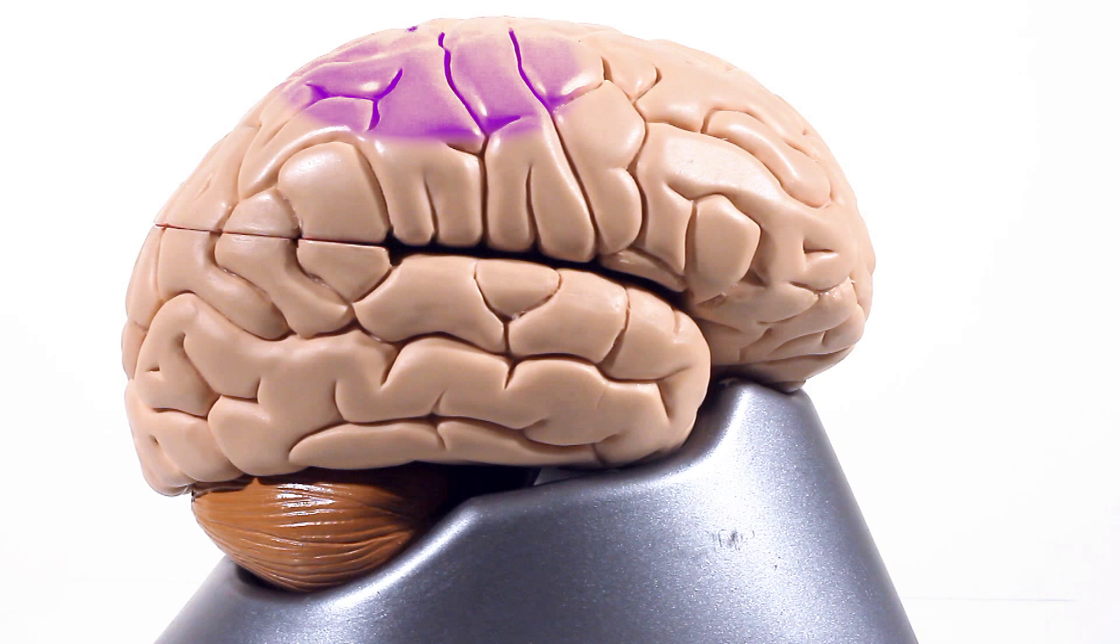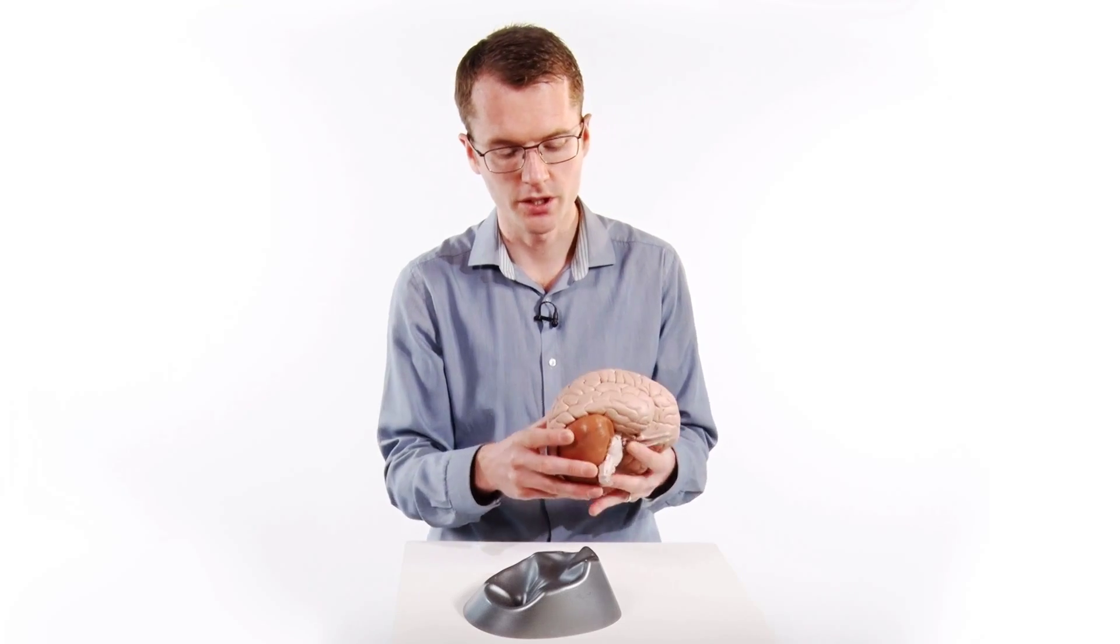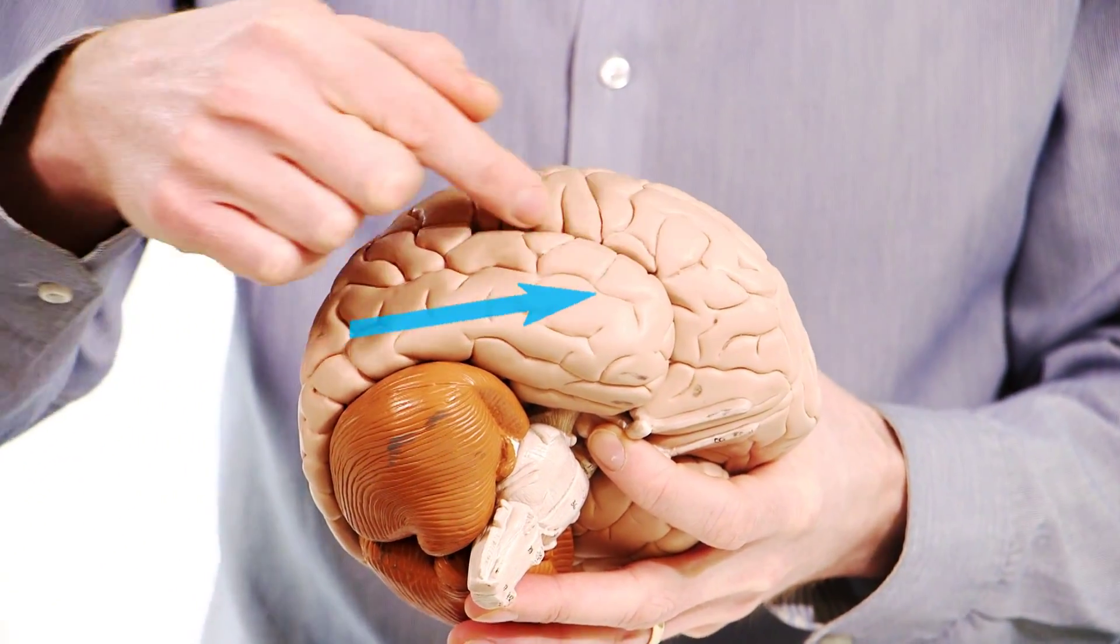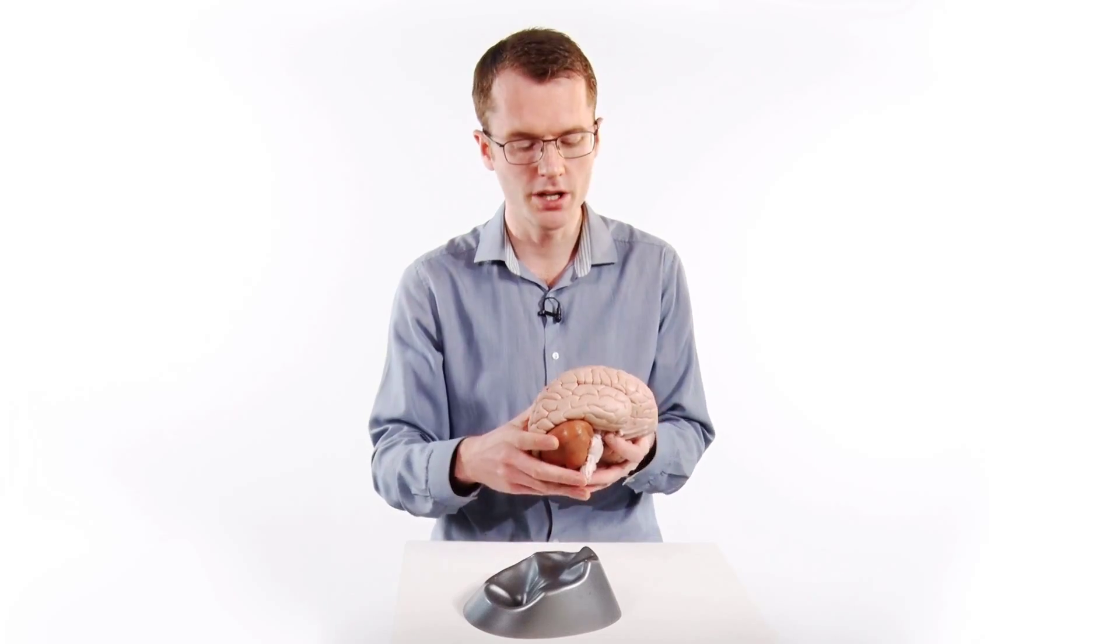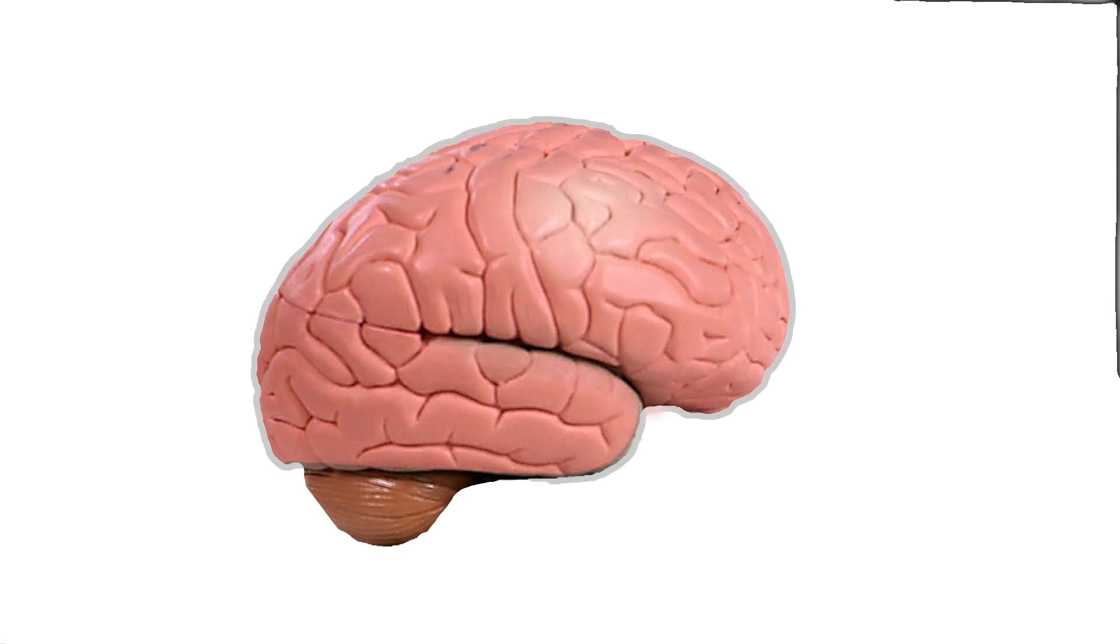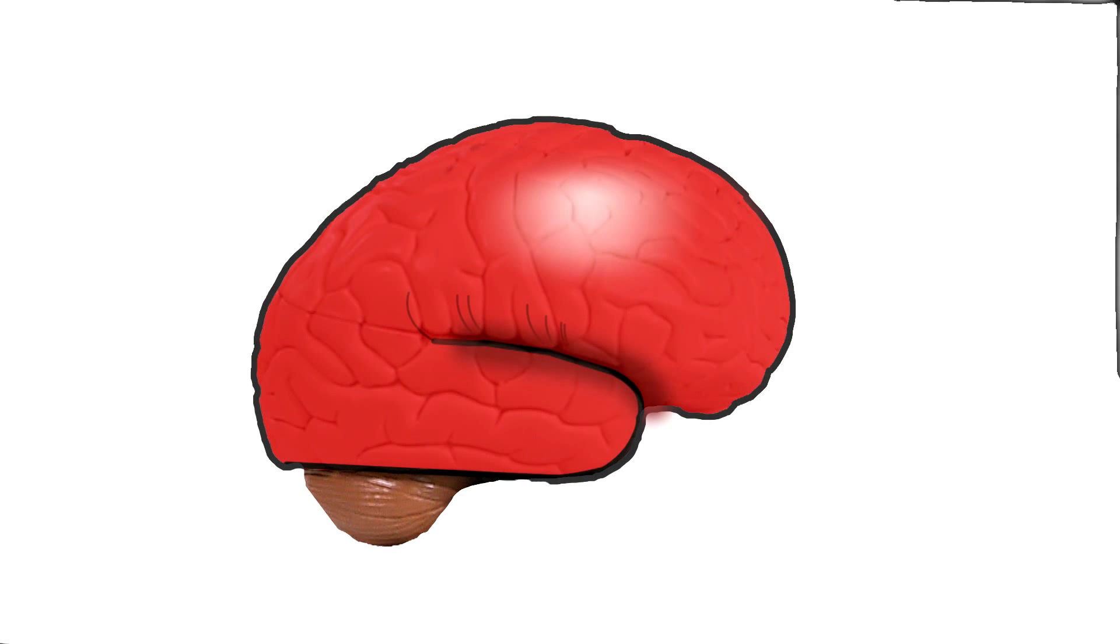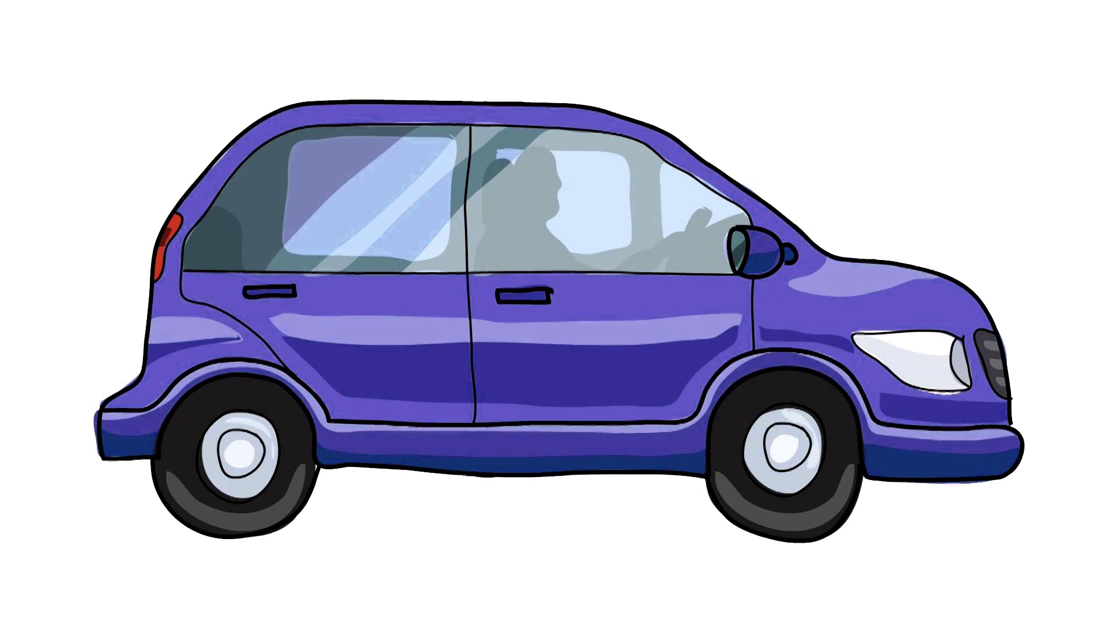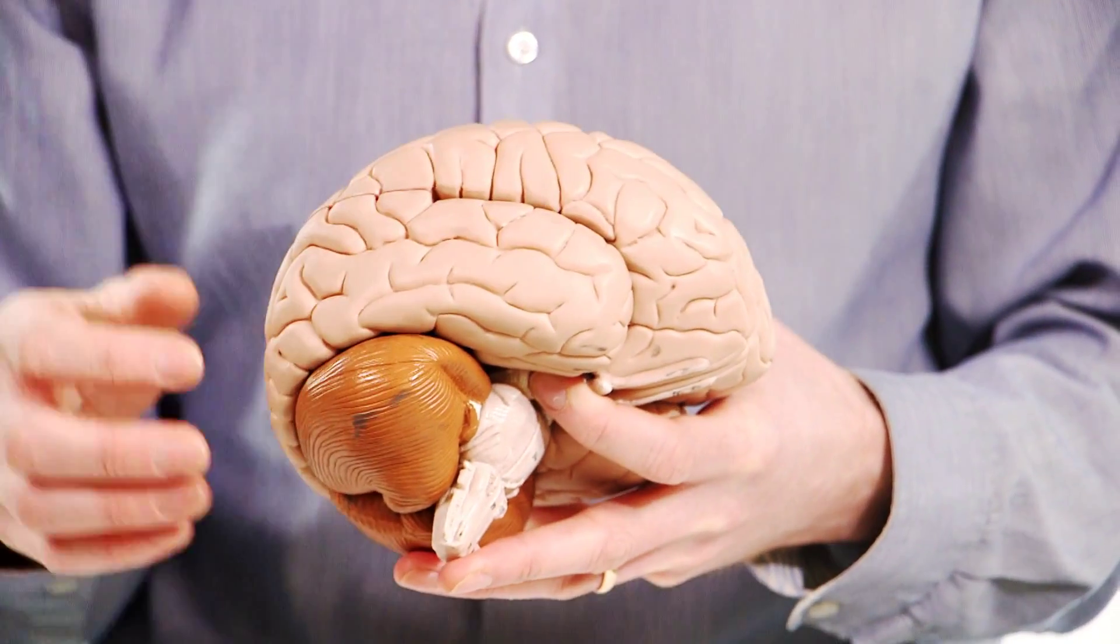Now we also want to know what color the car is. So the occipital lobe sends the signals round here to this temporal lobe. Now I think the brain looks a little bit like a boxing glove. And the temporal lobe is a little bit like the thumb tucked underneath the boxing glove. And the temporal lobe tells us what color the car is, and what make of car is. So what the car is.